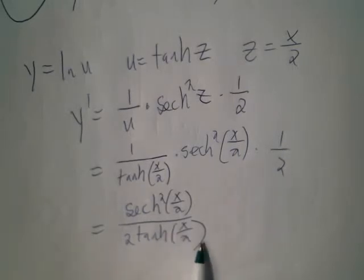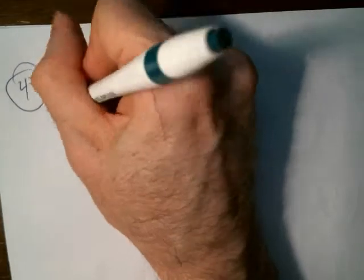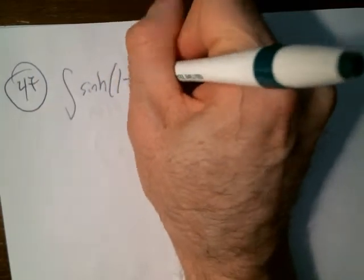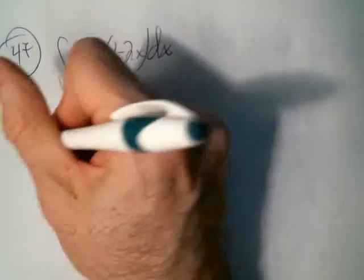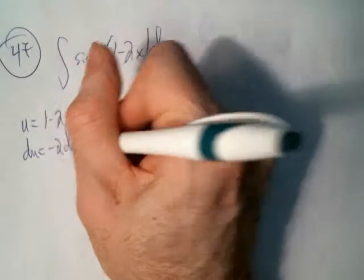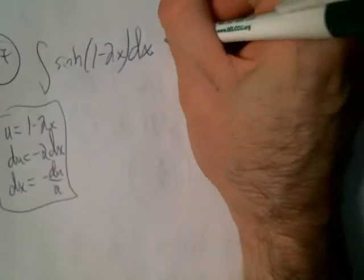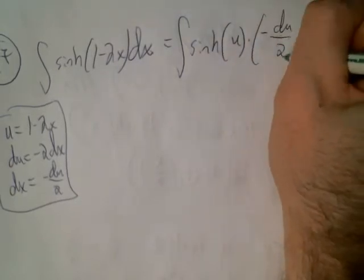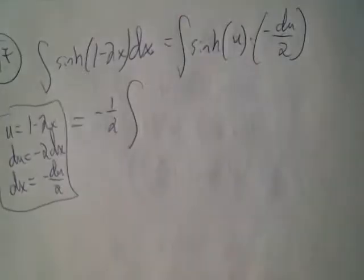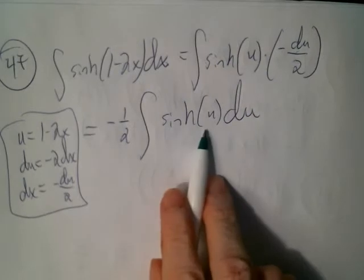If you see a different answer in the back of the book, it's because they've used identities. For the integral of sinh(1 - 2x) dx, we need a u-substitution: let u = 1 - 2x, so du = -2 dx, meaning dx = -du/2. After substitution, we get -1/2 times the integral of sinh(u) du, which is just -1/2 times cosh(u).